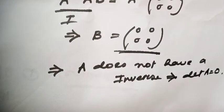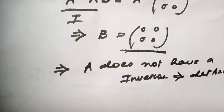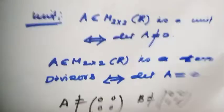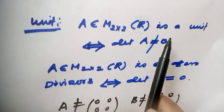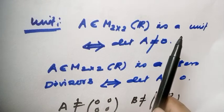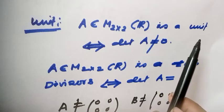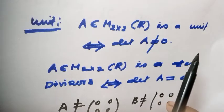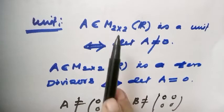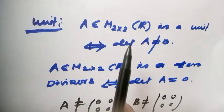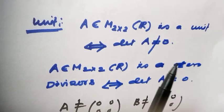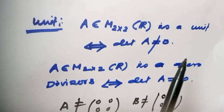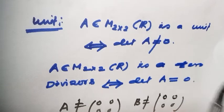Similarly, we can prove that A is a unit if and only if the determinant of A is non-zero. Therefore, by this observation we can find any unit and zero divisor of a matrix ring.